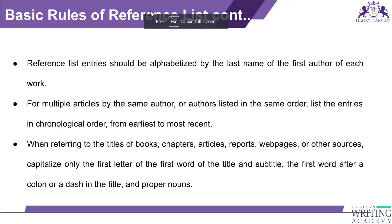The reference list entries should be alphabetical by the last name of the first author of each work. For multiple articles by the same author or authors listed in the same order, list the entries in chronological order from earliest to most recent. If one author wrote seven things you have read, list them under that author's name using decimals or numbered pointers.